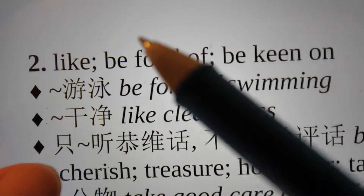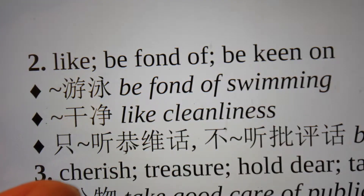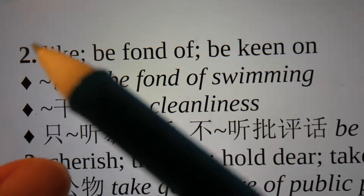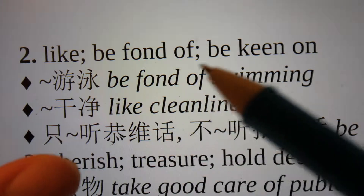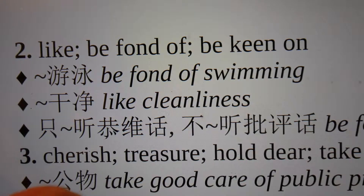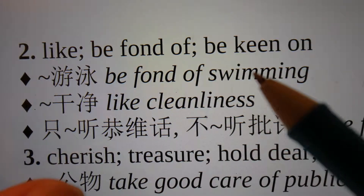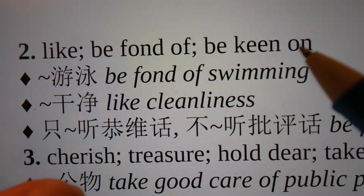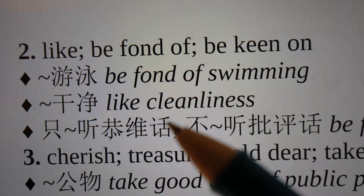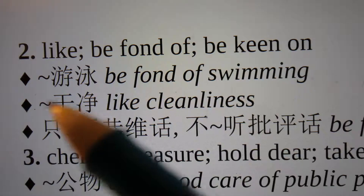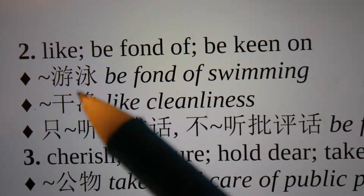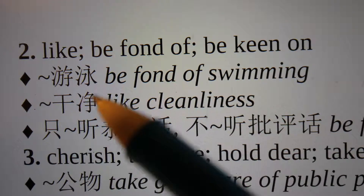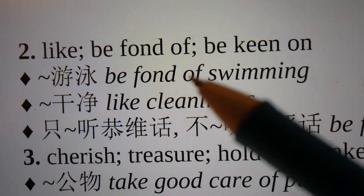The second meaning of 爱 can be 'like,' 'be fond of,' or 'be keen on.' For example, 爱游泳 means 'be fond of swimming.' 游泳 is swimming, which is a sport, and you can say 'be fond of swimming' is 爱游泳.